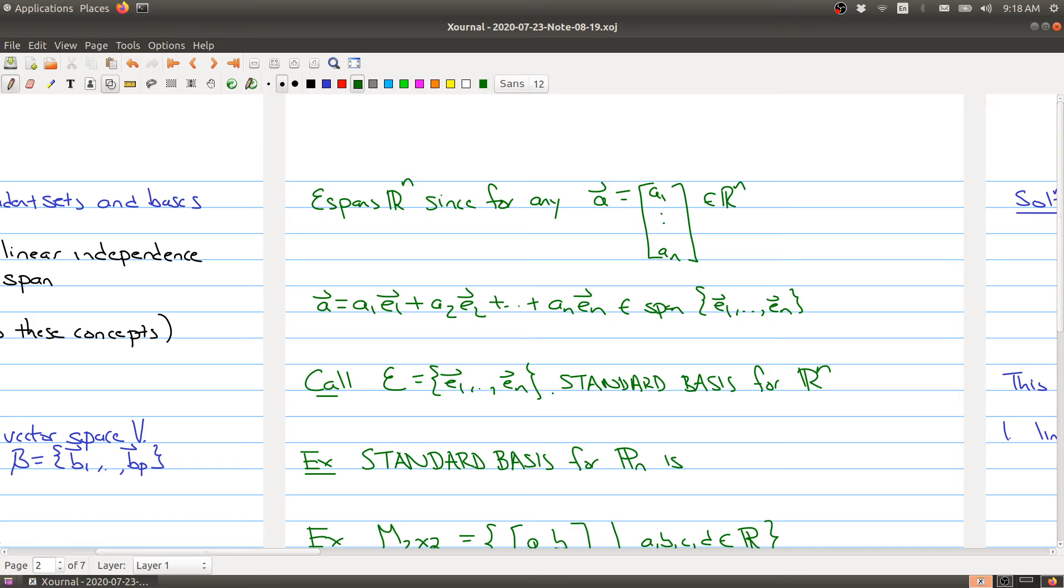There are standard bases for some of the other vector spaces. The standard basis for P_n, which is the set of all polynomials of degree n, is 1, t, t^2, up to t^n. This is considered the standard basis for P_n since any polynomial in P_n can be written as a linear combination of these n plus 1 polynomials.